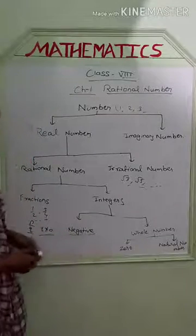Now, we will study the definition of a rational number. What is the definition of a rational number? A number which is in the form of p by q, where q is not equal to 0, is called a rational number. Examples include 1/3, minus 2/5, 3/4, and 0/1.